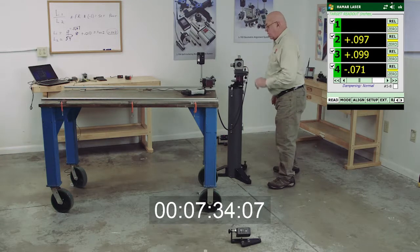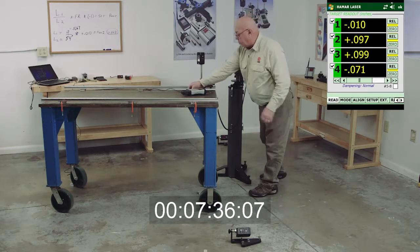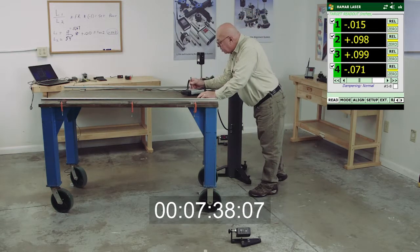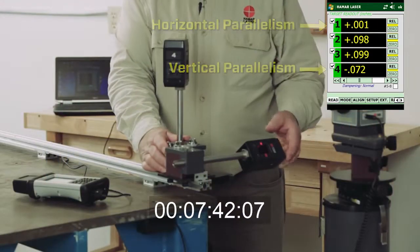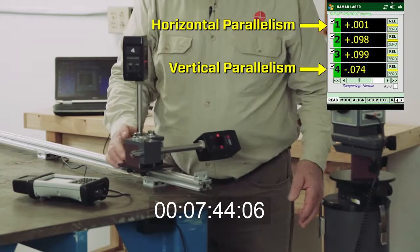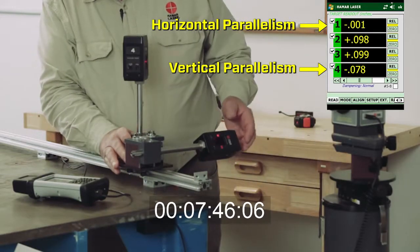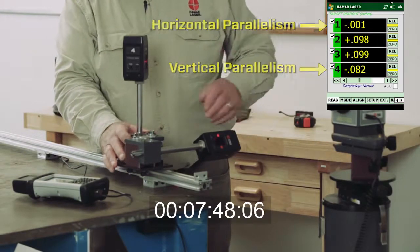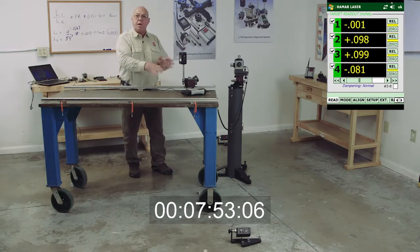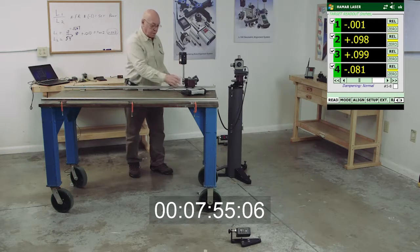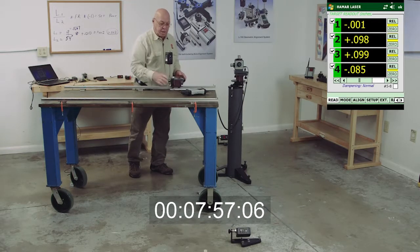So I can turn on this beam and I can make target number one zero. And move this to different positions and adjust the straightness and the parallelism and the levelness of this rail to that rail.